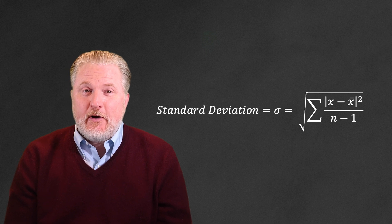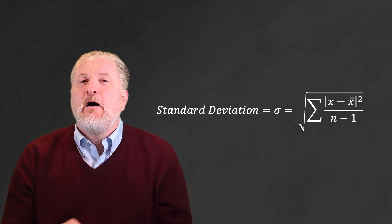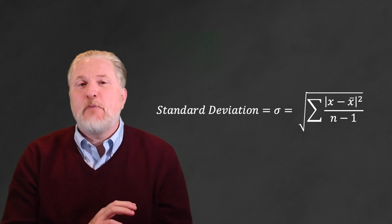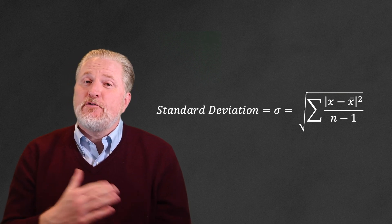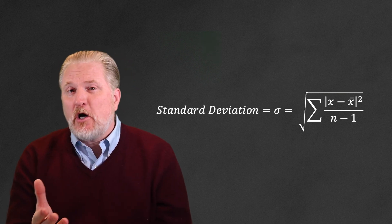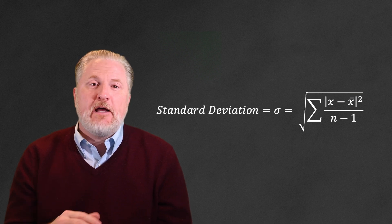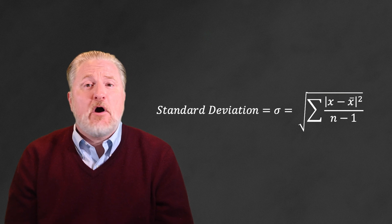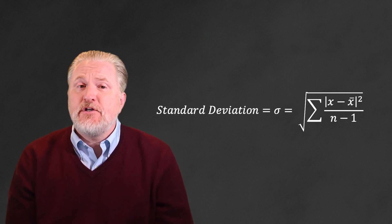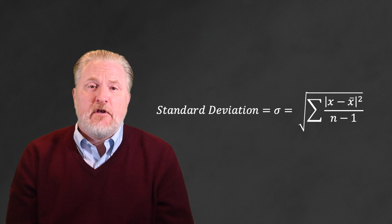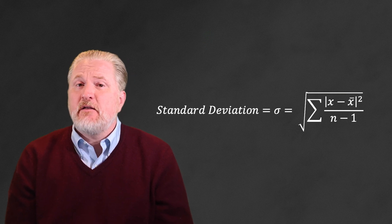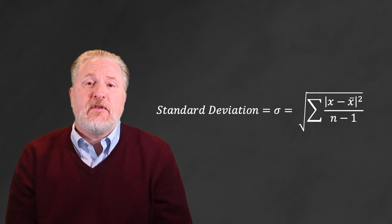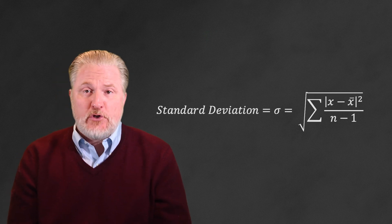The formula used to compute standard deviation is the following. Standard deviation, often denoted by sigma, is the square root of the summed differences between observation x and the average of all of the observations, x bar, squared, divided by n minus 1. Where x is the individual observation, x bar is the average value of a series of observations, and n minus 1 is the number of observations in the data set, less 1 to account for the fact that the data is a sample and not the true population in total.